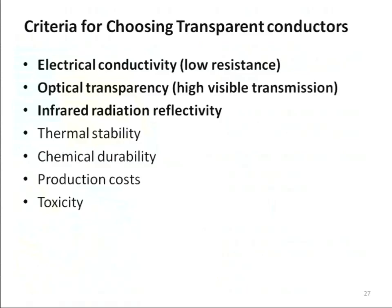Let's look at the criteria needed for a transparent electrode. You want electrical conductivity, but at the same time you want it to be optically transparent. These two requirements are actually at odds with one another — if you have too good a metal, it blocks the light, and if you let the light through too much, you've got a poor metal. It turns out these seemingly contradictory demands can be resolved by architecture.